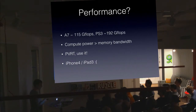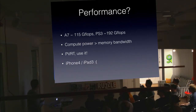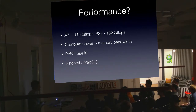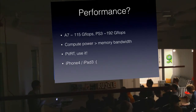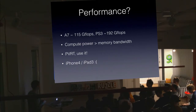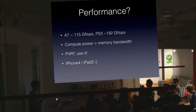What about performance? For the iPhone 4 there's no party, but for the new A7 chip it's actually really fast — it's approaching the speed of last-generation consoles in terms of shader performance, so there's a lot you can do. The compute power is much larger than the memory bandwidth; being a mobile system, the memory bandwidth is very limited.